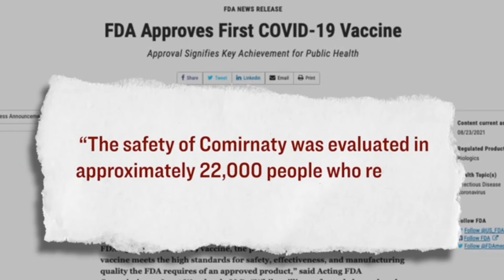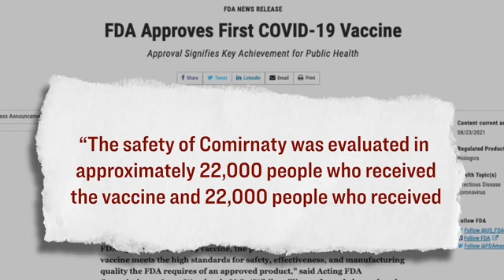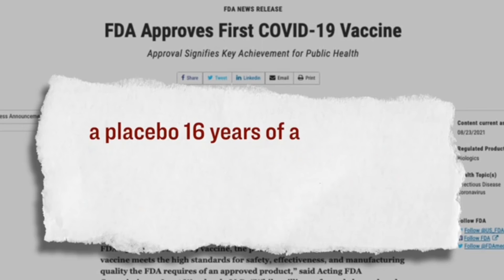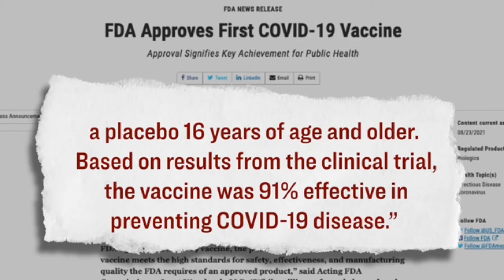And naturally enough, you might be wondering about the safety of these vaccines. And so in this FDA approval statement, here's what they wrote in terms of the clinical trials that were conducted in order to get this vaccine approved. The safety of Comirnaty was evaluated in approximately 22,000 people who received the vaccine and 22,000 people who received a placebo 16 years of age and older. Based on results from the clinical trial, the vaccine was 91% effective in preventing COVID-19 disease.